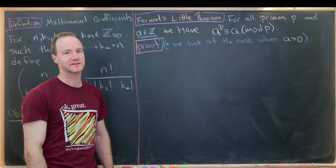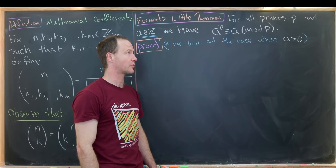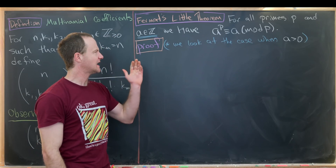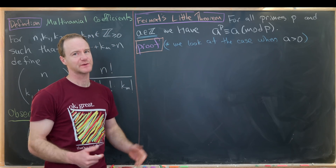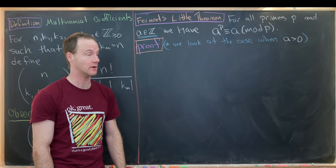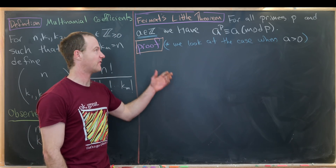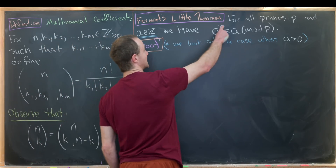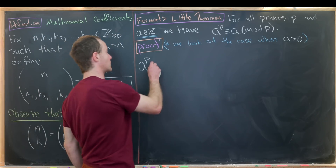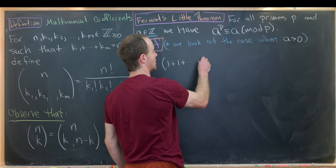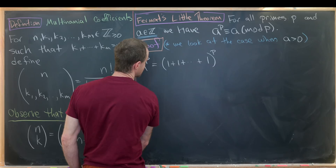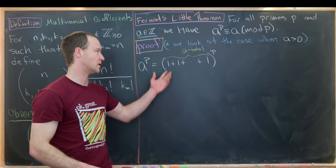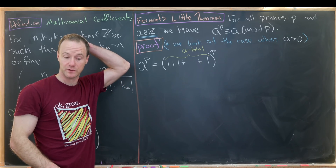Now we're going to prove Fermat's Little Theorem using these multinomial coefficients. The statement says: for all prime numbers p and integers a, we have a to the p is congruent to a mod p. Here we'll only look at the case when a is bigger than 0 — the case when a equals 0 is obvious since 0 to the p equals 0, and the case when a is less than 0 can follow from the positive case easily. We start with a to the p, and write it as 1 plus 1 plus all the way up to 1, to the p, with a total of a appearances of 1, since 1 plus 1 plus 1, a times, gives us a.